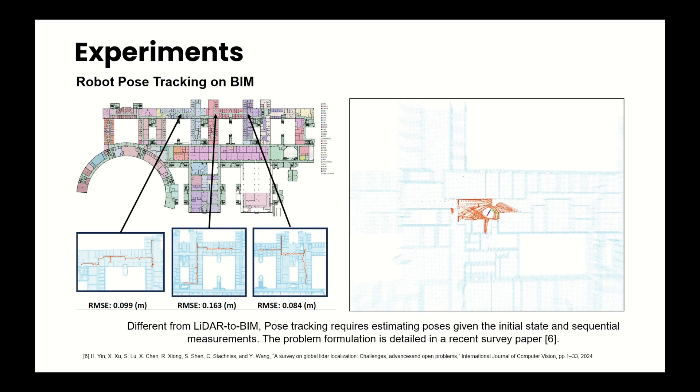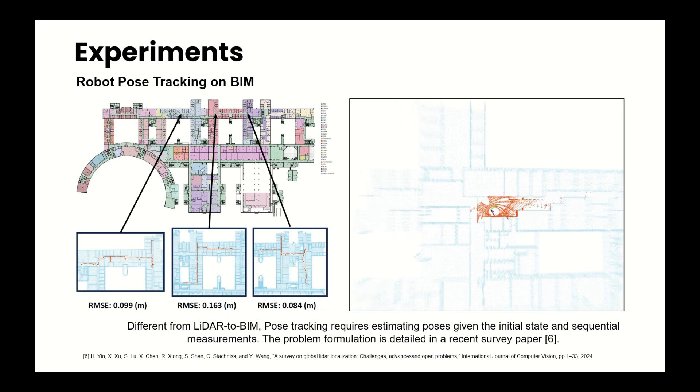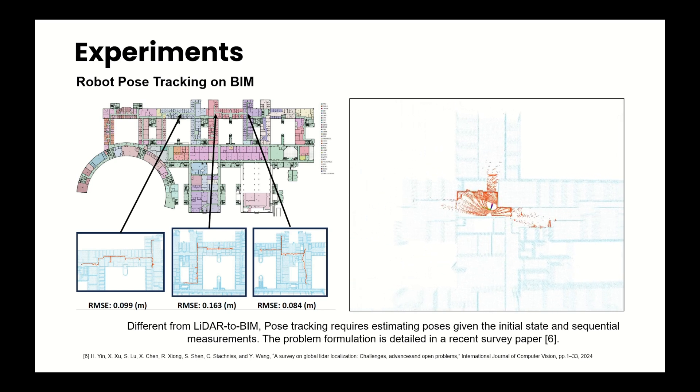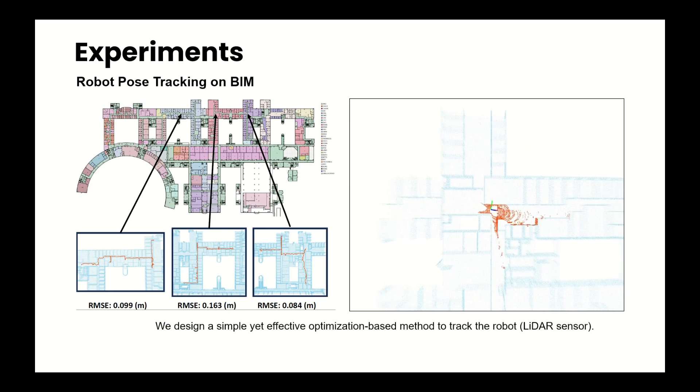Different from LiDAR-to-BIM, pose tracking requires estimating poses given the initial state and sequential measurements. We design a simple yet effective optimization-based method to track the robot.